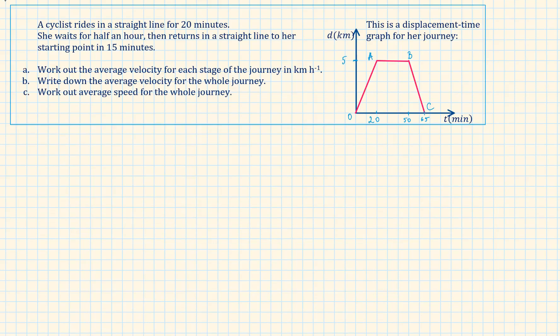Let's look at an actual example. A cyclist rides in a straight line for 20 minutes. On the graph, this is represented by OA. She waits for half an hour. This is represented by the horizontal line AB. Then, she returns in a straight line to her starting point in 15 minutes. This is represented by the line BC.